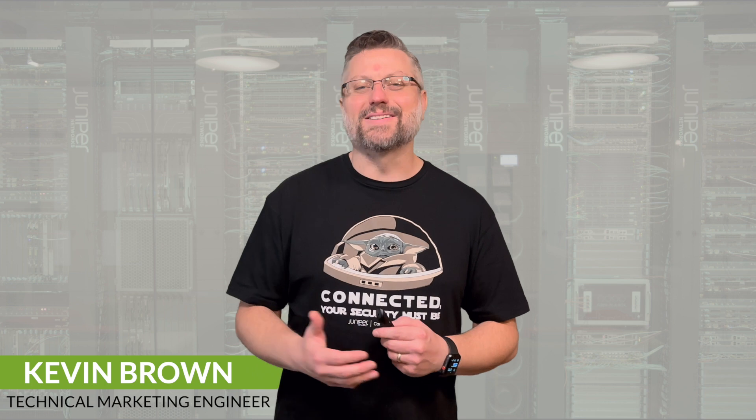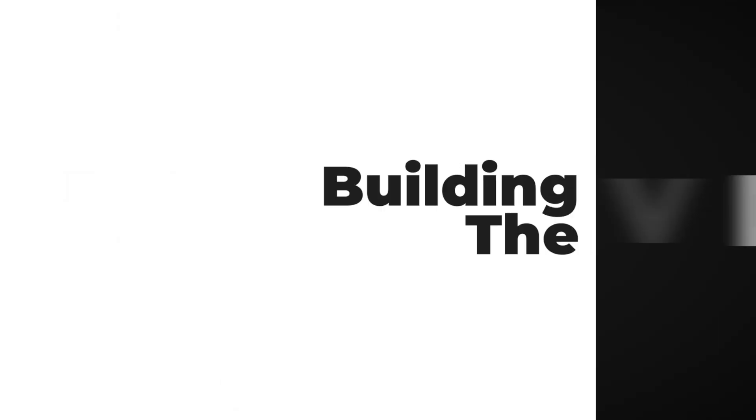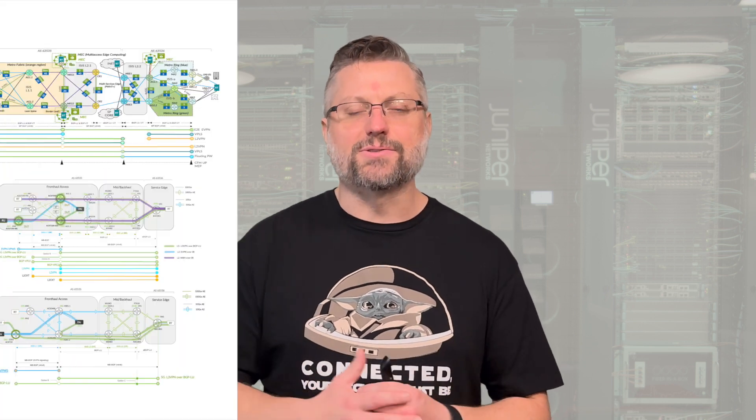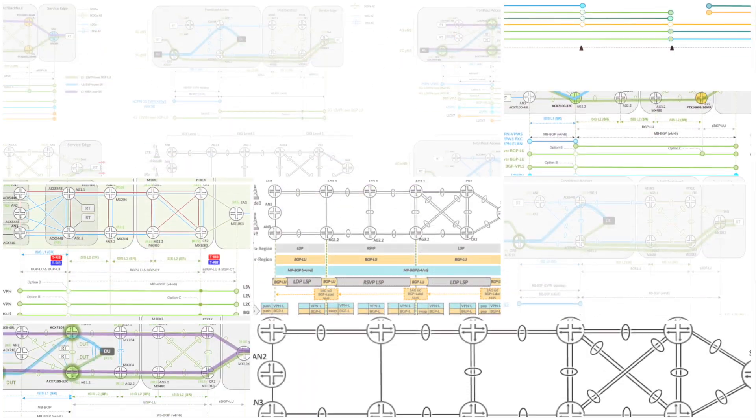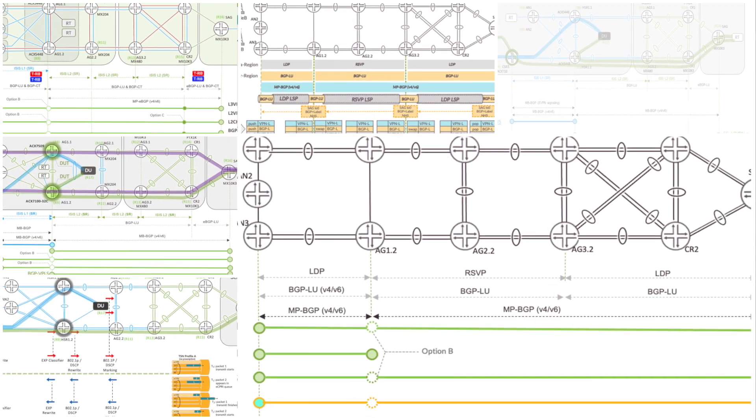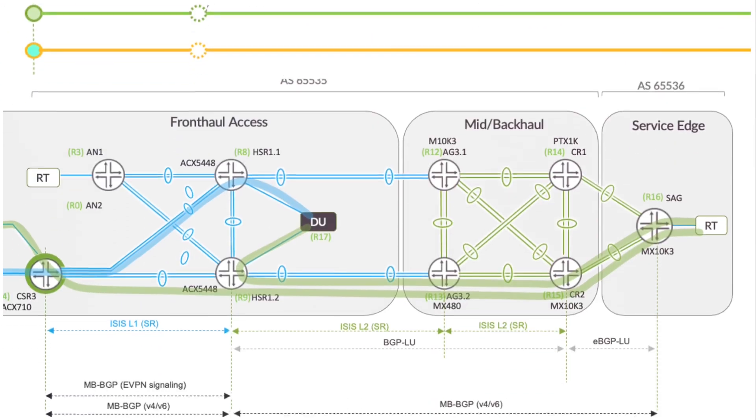Hi folks, welcome back to Juniper Validated Design for the Metro. Today's session is all about building the JVD. I like to talk about the modernization of the network as a journey — our customers are at all different stages along this path. The network evolves over time, adapting to new demands of the industry. There are new technologies, services, and protocols that are constantly reshaping the way we design networks, and of course that includes new physical infrastructure.